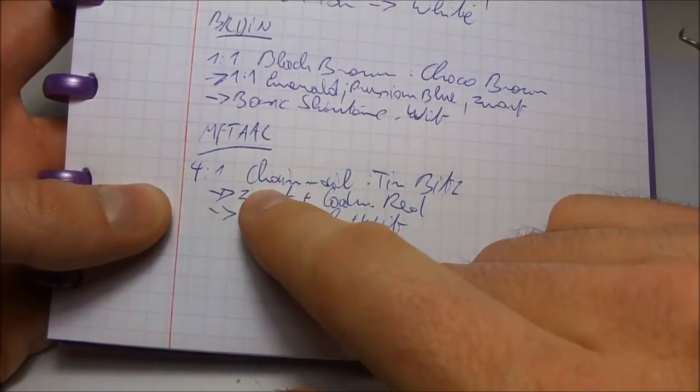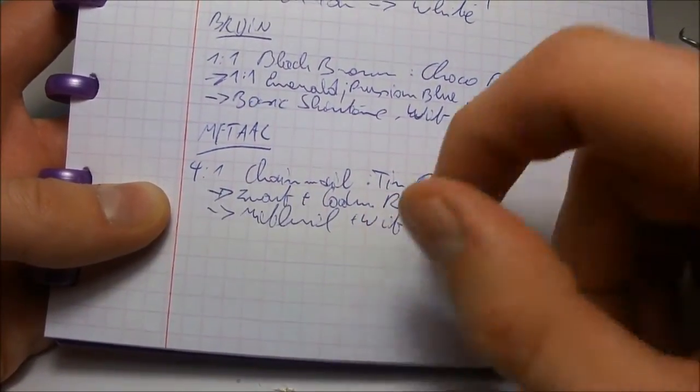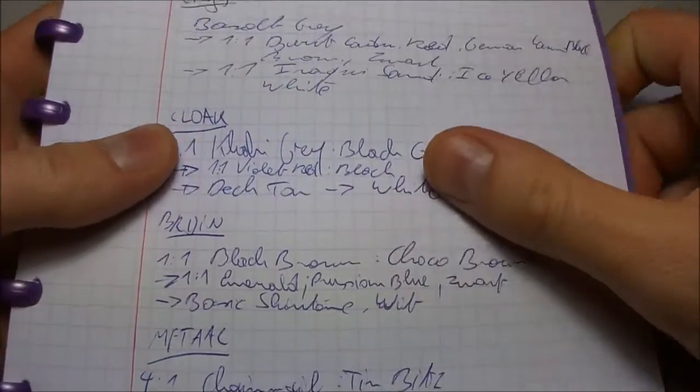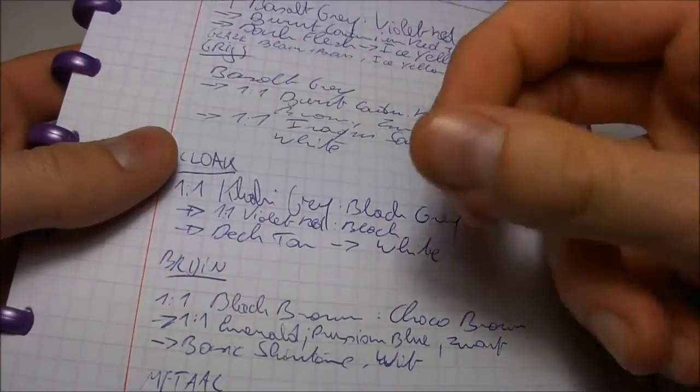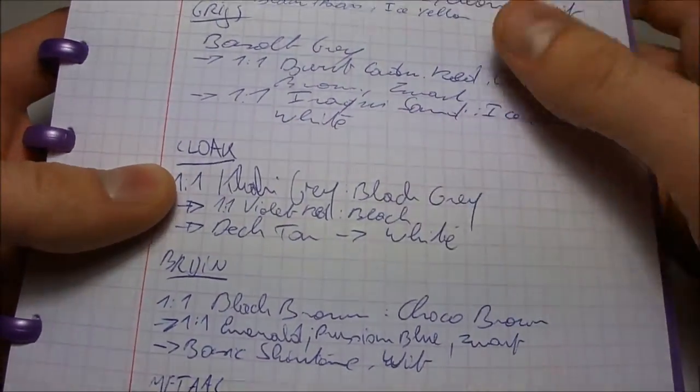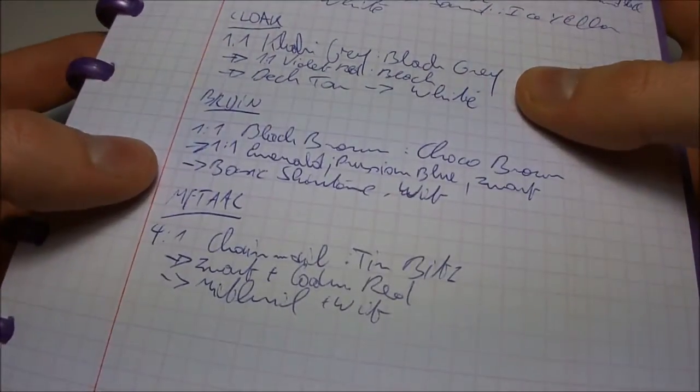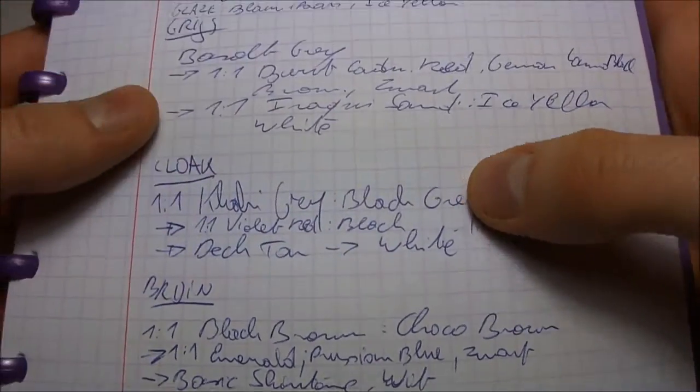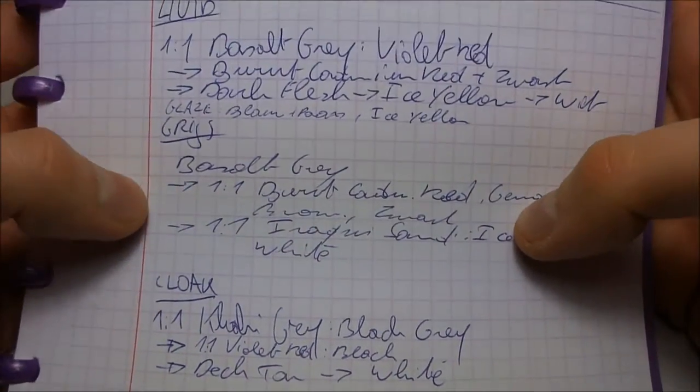Or here for the metallics, I used 4 to 1 chainmail to tin bits, which means four parts of chainmail and one part of tin bits. I don't measure any drops or something, I just usually judge the amount of paint. It's not precise science, but that's really not a problem.